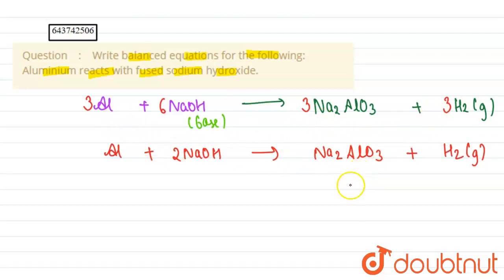But since we can take 3 common, this is the more appropriate answer. And NaOH here is in fused state, that is molten state.